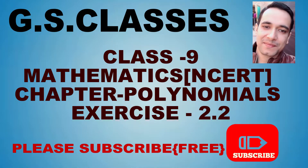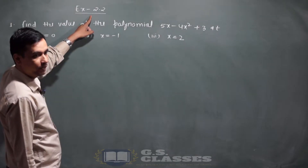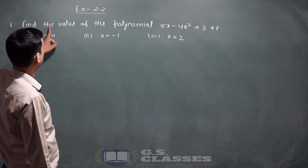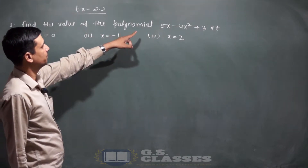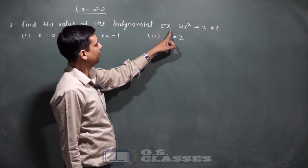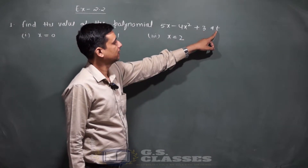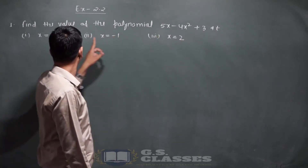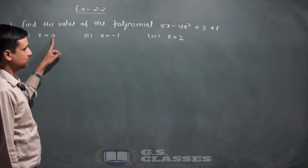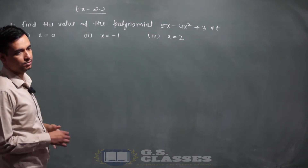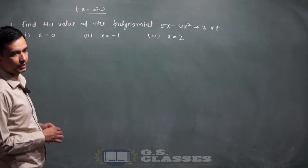I will try Exercise 2.2, question number 1: find the value of the polynomial 5x minus 4x square plus 3 at x equals to 0, x equals to minus 1, and x equals to 2.